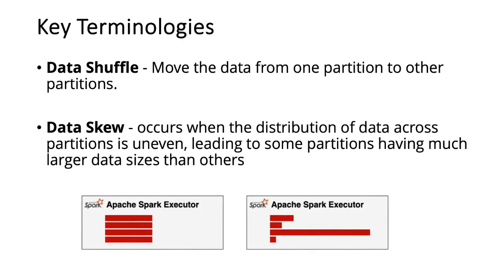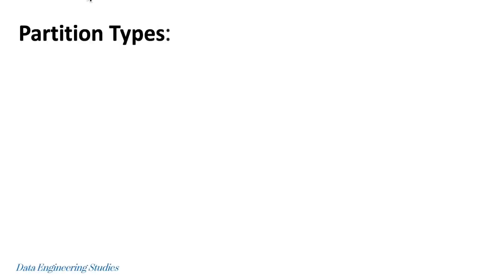If you see this example, in the first diagram, data is evenly distributed across all the partitions. Whereas in the second example, the distribution of data across the partitions is uneven — in this example, the data is skewed.